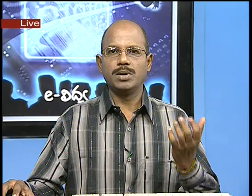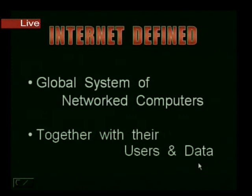A network consists of large amounts of data, which is accessed by people across the globe. Internet includes not just the connected networks, but also the people who use them and the data contained within. So, internet is a global system of networked computers together with their users and data. This is the definition of internet.